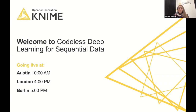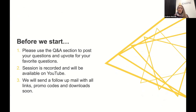In this webinar we want to show you the special requirements of sequential data, why you shouldn't use a standard feed-forward neural network for sequential data, which network architectures you can use instead, and how you can implement these architectures in KNIME Analytics Platform by looking at three examples. Please use the Q&A section to post and upvote questions. This session is recorded and will be available on YouTube, and after the event we will send a follow-up email with links and download information.